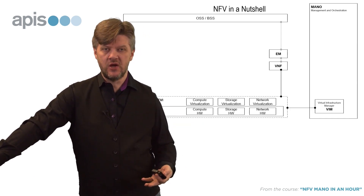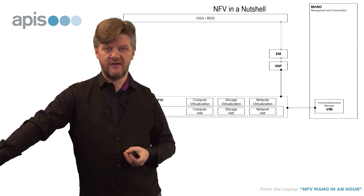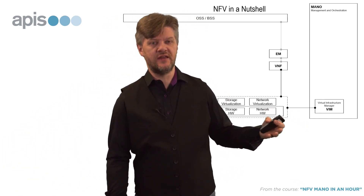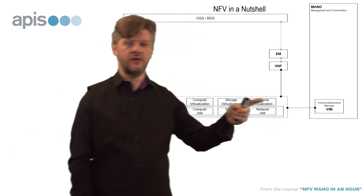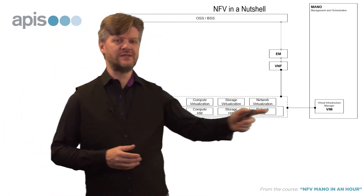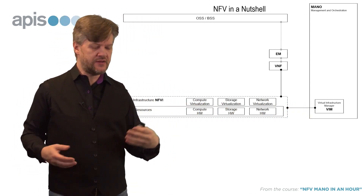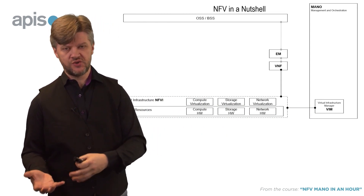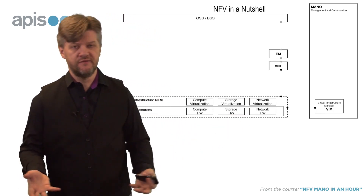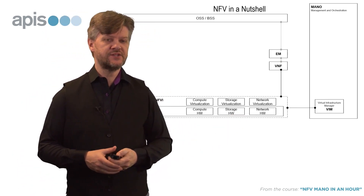Inside MANO there are no less than three different functions. Starting from the bottom we have the VIM, which is the virtual infrastructure manager — the only one that talks to the NFVI. It's the one that actually sends commands to start and stop virtual machines, to mount storage to those virtual machines, and to create virtual networks with virtual switches and similar things.